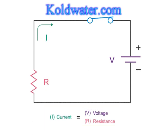This means that when you increase voltage and keep resistance constant, current flow increases. As resistance in a circuit increases and voltage remains constant, the current flow decreases.